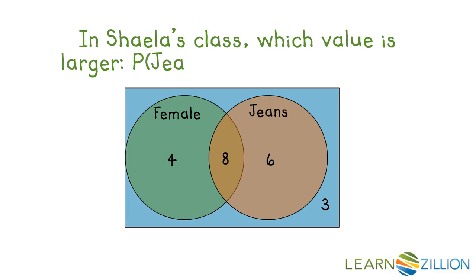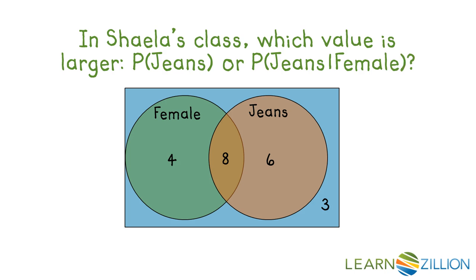In Shayla's class, which value is larger: the probability that someone is wearing jeans, or the probability that if someone is female, they're wearing jeans?